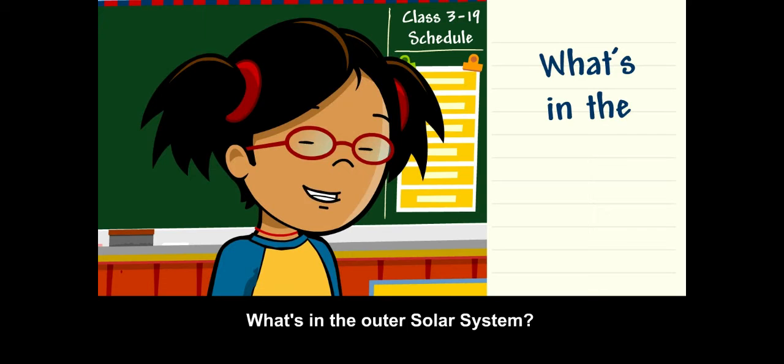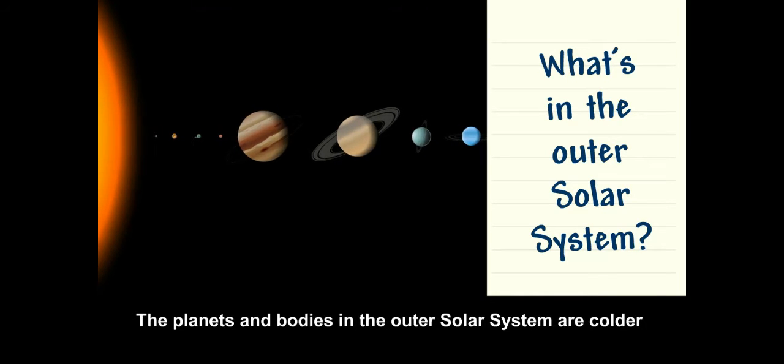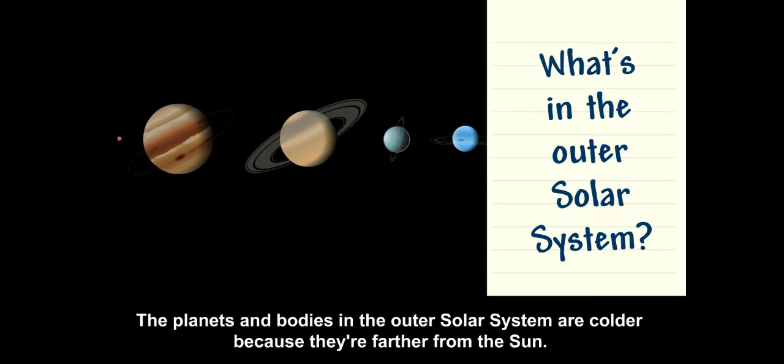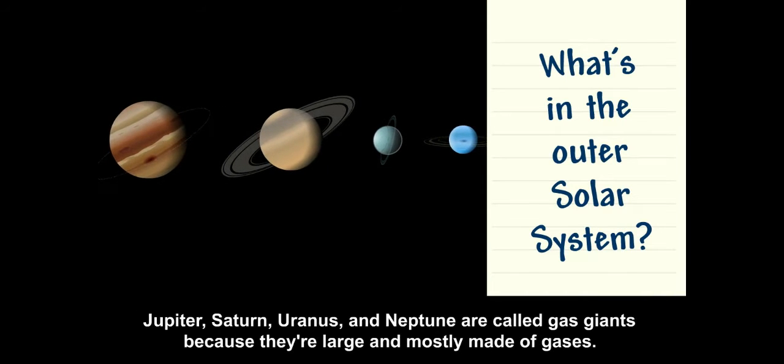What's in the outer solar system? The planets and bodies in the outer solar system are colder because they're farther from the sun. Jupiter, Saturn, Uranus, and Neptune are called gas giants because they're large and mostly made of gases.